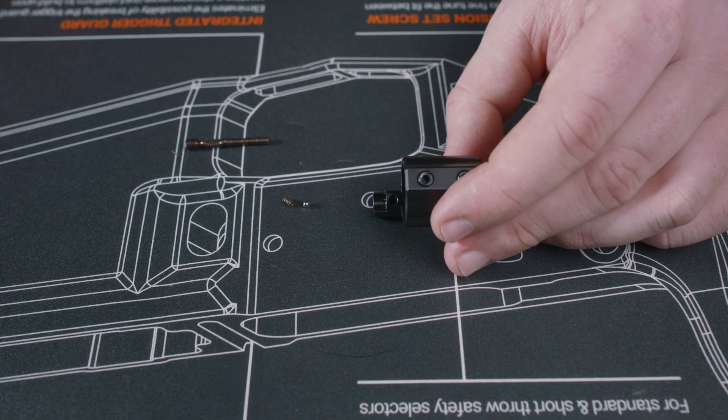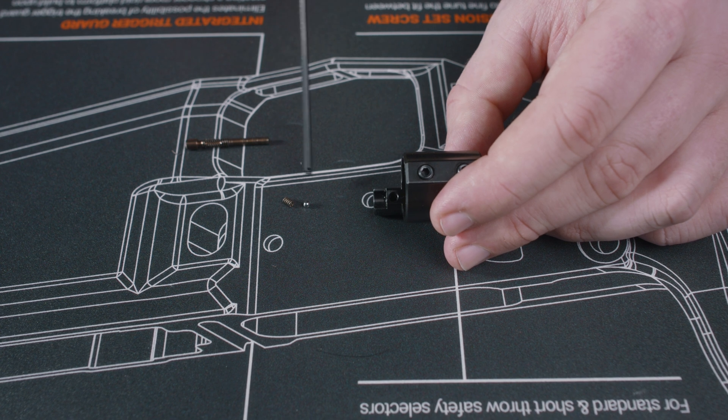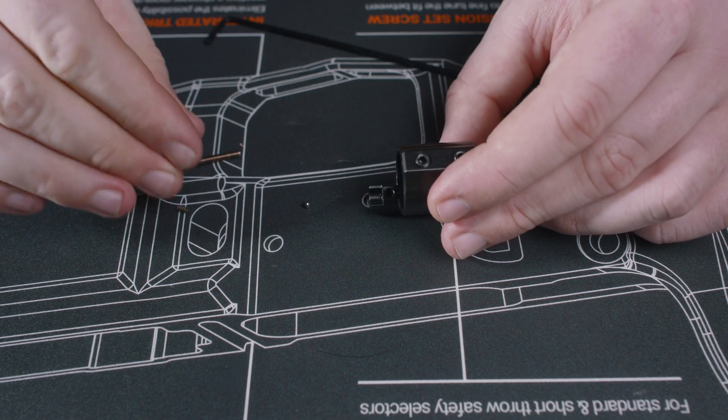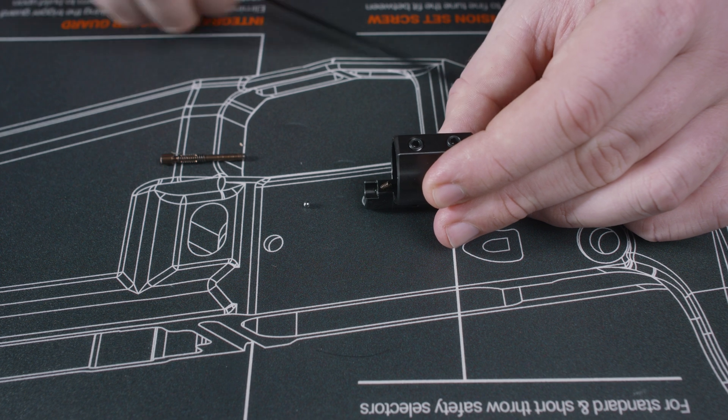So now that we have everything disassembled, the reassembly process is super easy. You're going to want to take note of that little hole right there. That's where the detent and spring are going to sit. So we're going to start with our spring and we're going to drop that in there first. They're a little hard to hold on to, but get that dropped in there just like that.